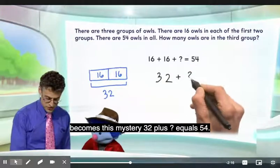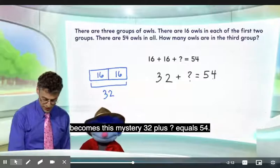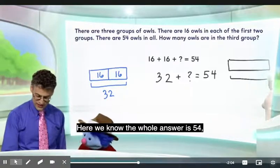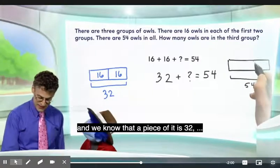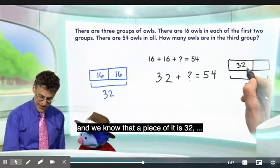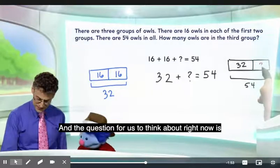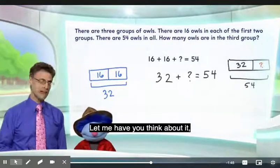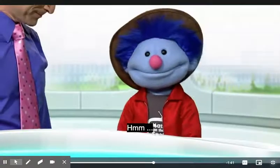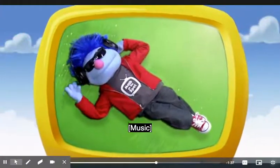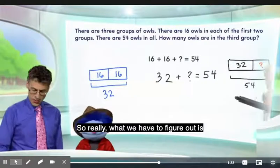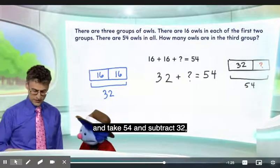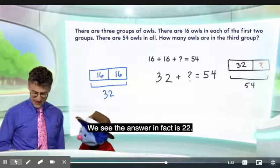Now we can set up a new model. Here we know the whole answer is 54, and we know that a piece of it is 32, and now this becomes the mystery. The question is: how would we figure out that mystery — would we use addition or subtraction? Really, what we have to figure out is what number, when added to 32, makes 54. One way to think about it is to use subtraction: take 54 and subtract 32. If you visualize it, the answer is 22.